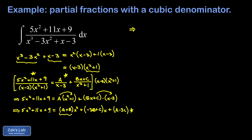This reasoning generates our system of equations. A plus B must equal 5 (matching x squared coefficients). Looking at the linear terms, negative 3B plus C must equal 11. Finally, comparing constants on both sides, A minus 3C equals 9.